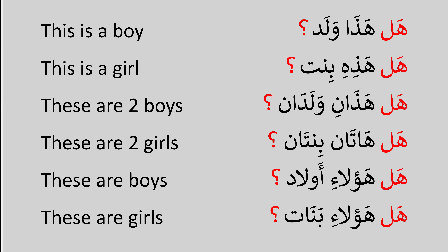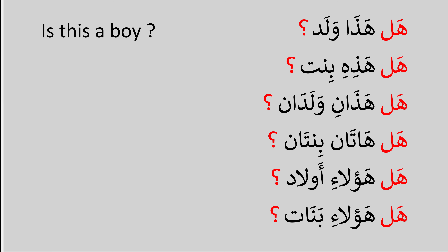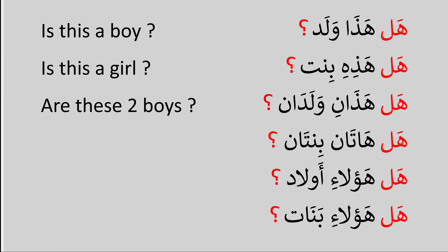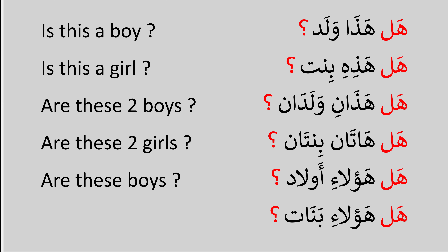So they become: هل هذا ولد؟ — Is this a boy? هل هذه بنت؟ — Is this a girl? هل هذان ولدان؟ — Are these two boys? هل هاتان بنتان؟ — Are these two girls? هل هؤلاء أولاد؟ — Are these boys? هل هؤلاء بنات؟ — Are these girls?